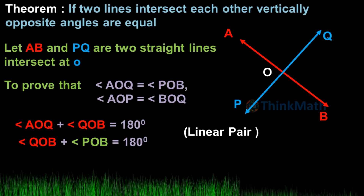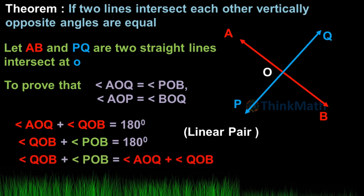Therefore angle QOB plus angle POB is equal to angle AOQ plus angle QOB. Cancel angle QOB from both sides.